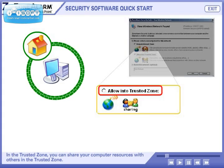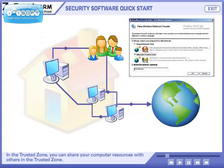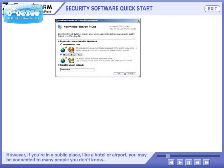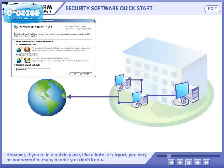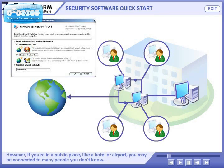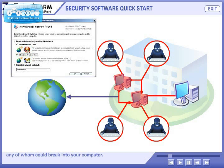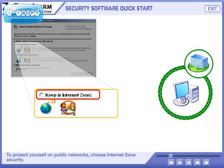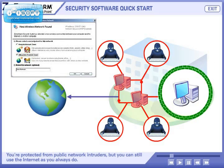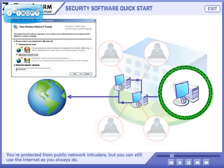In the Trusted Zone, you can share your computer resources with others in the Trusted Zone. However, if you're in a public place like a hotel or airport, you may be connected to many people you don't know, any of whom could break into your computer. To protect yourself on public networks, choose Internet Zone Security. You're protected from public network intruders, but you can still use the Internet as you always do.